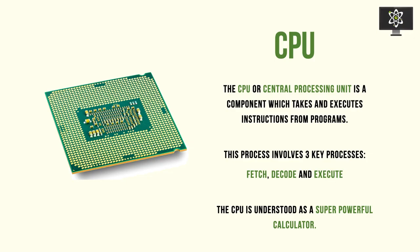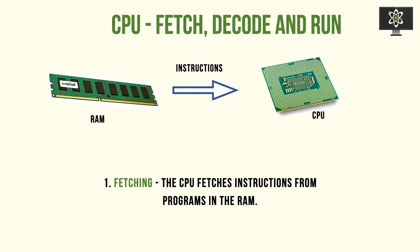You can understand the CPU as a very, very super powerful calculator. From whatever is decoded to the execution stage, the CPU essentially calculates machine code — it's given instructions by the RAM to calculate machine code. Let's look at the CPU cycle: the fetching, decoding, and executing processes are the three main processes that take place at the CPU.